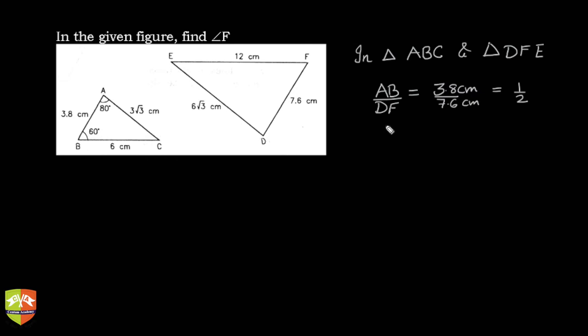Also, let's find out BC by FE. BC by FE, again if you see, this is 6 cm by 12 cm, which is equal to 1 upon 2 again. So it gives us a hint that it is going to be a similar triangle pair. But just to confirm...